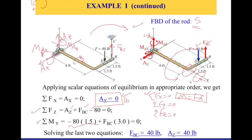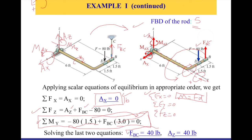In this moment equation about the y-axis, there is only one unknown — FBC. Moving the term to the other side and dividing by 3 gives FBC = 40 pounds. With FBC known, I substitute it into the ΣFz equation: Az + 40 − 80 = 0, giving Az = 40 pounds. So far we've found Ax = 0, FBC = 40 lb, and Az = 40 lb — the reactive forces in the support and the cable tension.